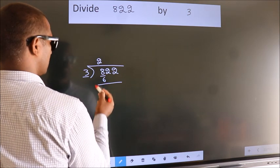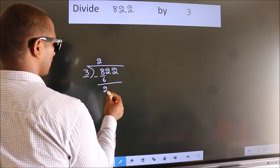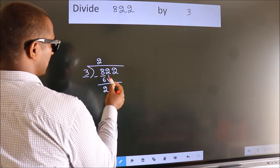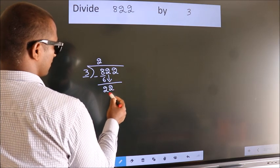Now, we should subtract. We get 2. After this, bring down the beside number. So, 2 down. So, 22.